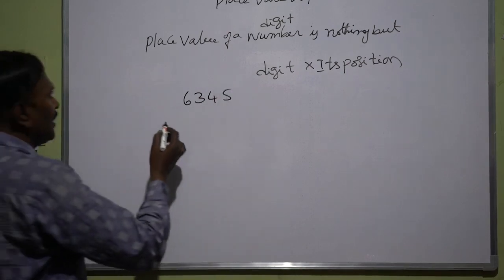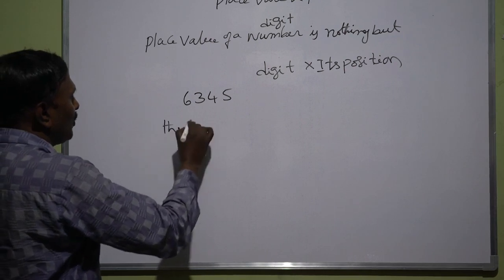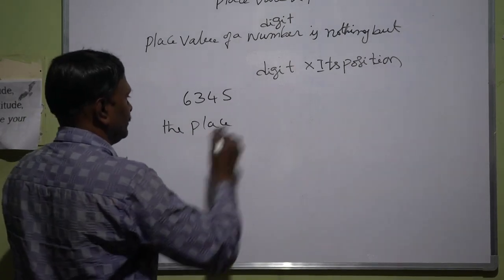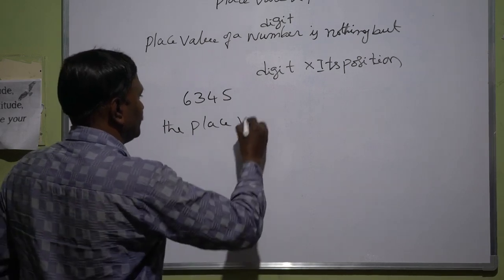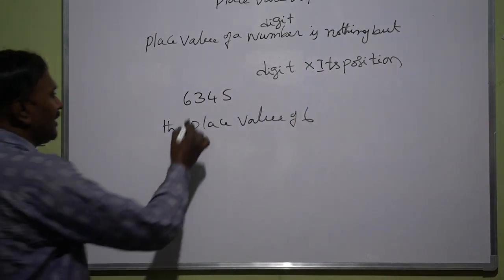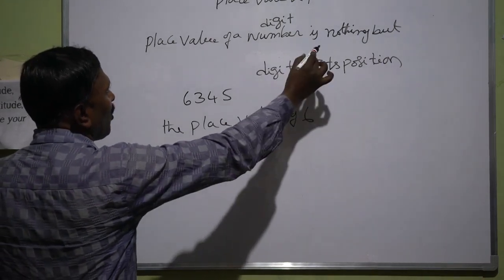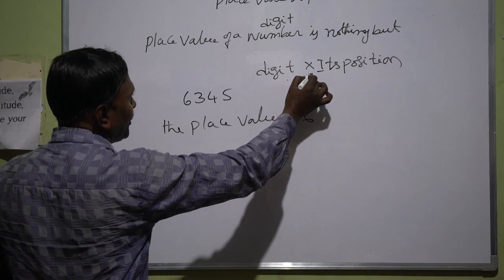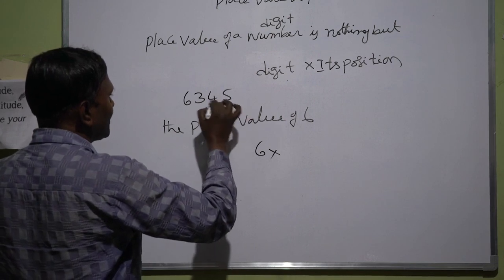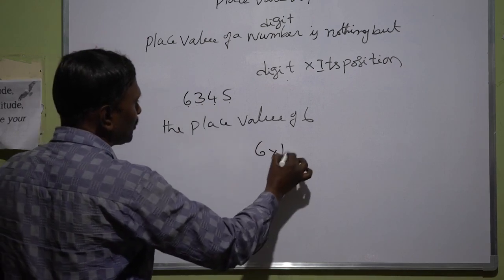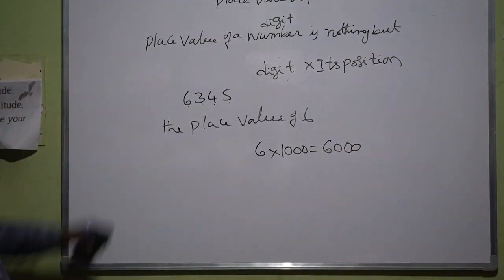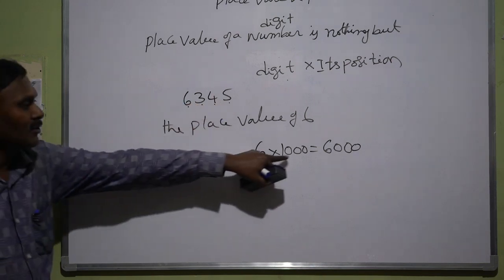See, if suppose the place value of 6 — the place value of 6. So by definition, the place value of a digit is nothing but digit into its position. So 6 into — this is unit place, this is tens place, this is hundreds place, this is thousands place. So 6 into 1000, this is 6000. So the place value of 6 in the given number 6345 is 6 into 1000, which is 6000.